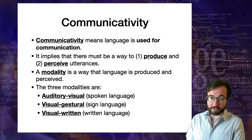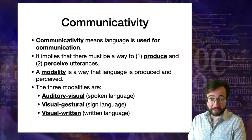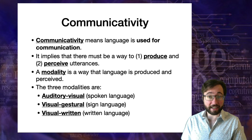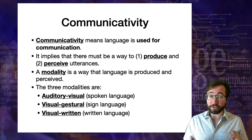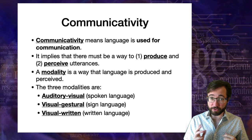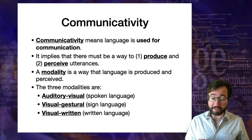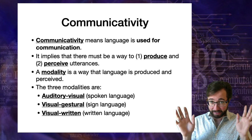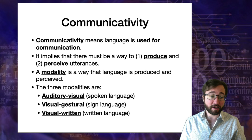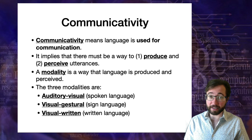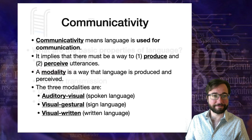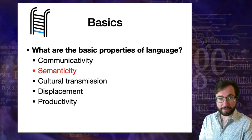To sum up communicativity: it means language is used for communication, which means there must be a way to produce and perceive utterances. A modality is a way in which language is produced and perceived. Auditory-vocal language means you produce by talking and perceive by listening. Visual-gestural language means you produce by signing and perceive by vision. Visual-written language means you produce by writing and perceive by reading.